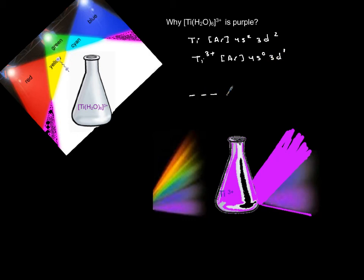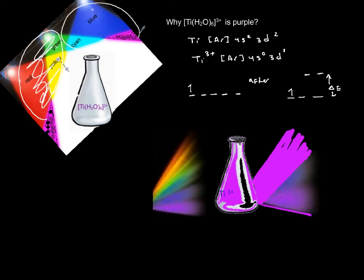So what happens is now your d orbitals before are here, and you simply have one electron. After a ligand approaches, these d orbitals are going to split into two energy levels. Now in the case of titanium, what we are going to do is we are going to borrow the red, the yellow, the green from white light—it's going to be absorbed—and the leftover, which is the combination of the other colors, complementary color in terms of purple, comes out. So this is light going through.